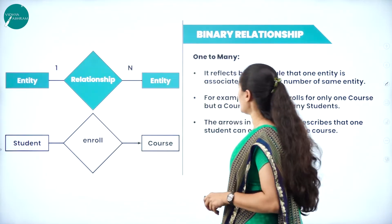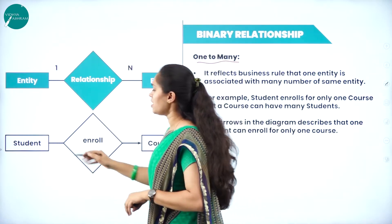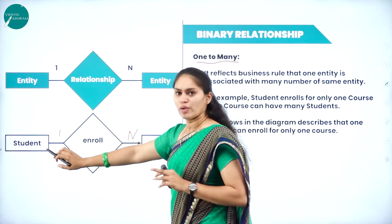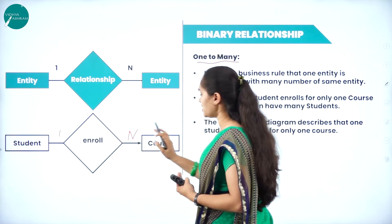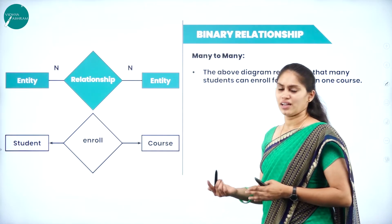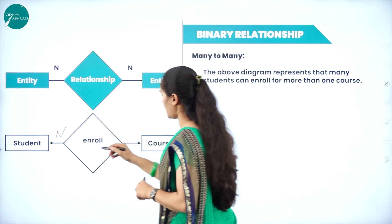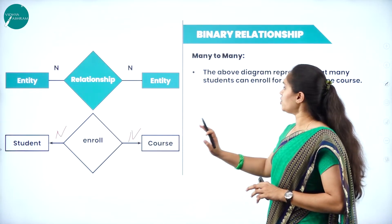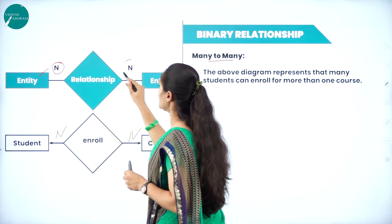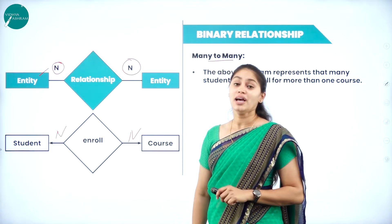In a one-to-many relationship, one entity can have a relationship with any number of entities — for example, one student can enroll in any number of courses. In many-to-many (n to n), any number of students can enroll in any number of courses. So one entity will have n number of relationships with n number of entities. These are the three types of binary relationships: one-to-one, one-to-many, and many-to-many.